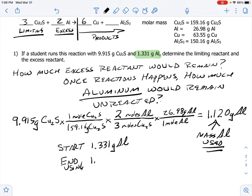So I'm starting with 1.331 grams of aluminum, I'm going to end up using 1.120 grams of aluminum, and I'm going to subtract those. And my subtraction ends up with 0.211 grams of aluminum, and that's how much is remaining.